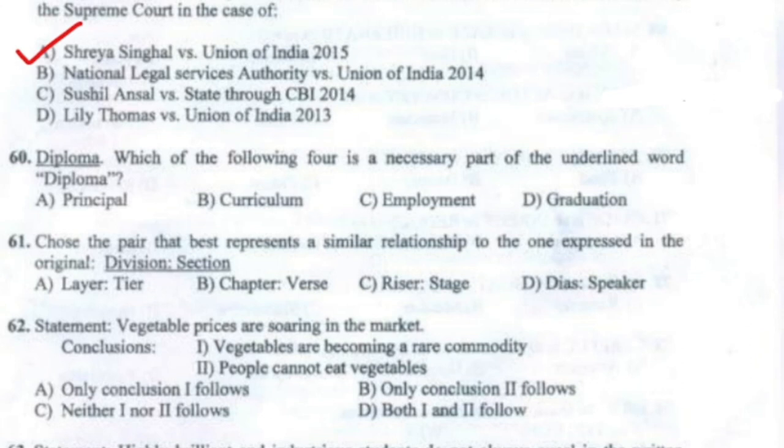Question 60: Which of the following four is the necessary part of the underlined word 'Diploma'? The answer is Option B — Curriculum.